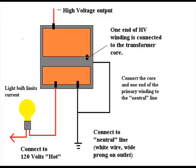One way to limit current is by putting a light bulb in series with the transformer's primary winding. This will limit the power to the wattage rating of the light bulb. For example, if you use a 100 watt light bulb, the maximum amount of power the transformer could draw would be about 100 watts. If you want to draw more current, simply use a higher wattage light bulb. A light bulb really isn't the best way to limit current because it can cause the voltage to be unstable, but it is safe and will at least protect the transformer from overloads.